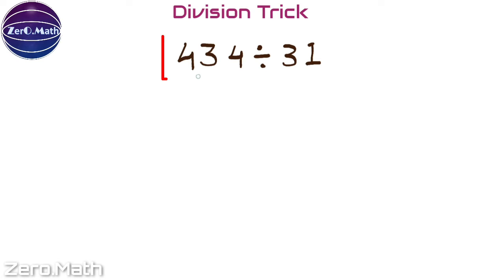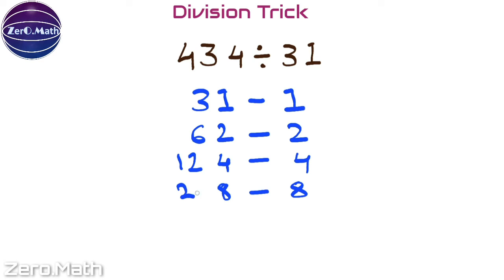Let us solve this final division sum along with me. Let us divide 434 by 31. Here, 31 represents 1 unit. Value of 2 units would be 62. Value of 4 units will be 124. Value of 8 units is 248. And value of 10 units is 31 times 10, which is 310.